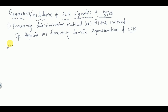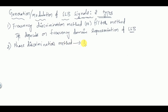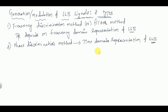The second method is the phase discrimination method. This method depends on the time domain representation of SSB. So the frequency discrimination method depends on frequency domain representation, while the phase discrimination method depends on time domain representation — these are the two important points to remember.